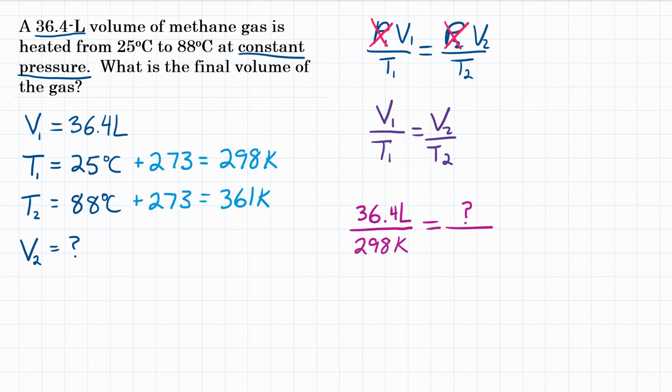That is equal to V2, which we don't know, so you could put an X or a question mark there, over T2, which is 361 Kelvin. So now we solve.